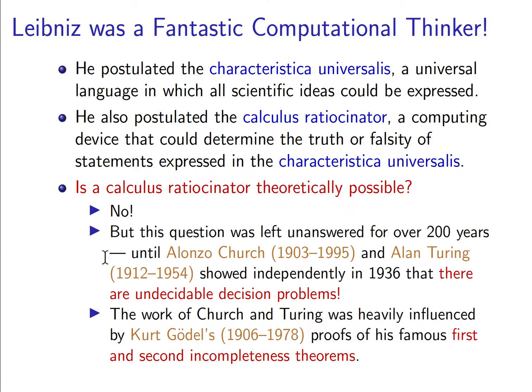So I could write down a statement like 'the sun will burn out in a hundred years,' give it to my Calculus Ratiocinator, turn it on, and it comes back with a yes or no answer — the truth. We can use this to determine if the sun really will burn out in a hundred years. But the question is: is this at all possible? No, it's not possible. But no one knew this when Leibniz proposed this idea. Leibniz was basically saying: let's imagine we can solve any problem with computation.